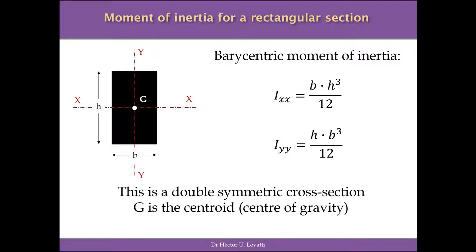We are going to define formulas for the barycentric moment of inertia of this rectangle, which has base B and height H. The moment of inertia about axis X is Ix = B × H³ / 12. For the moment of inertia about axis Y, the formula becomes Iy = H × B³ / 12. Basically it's the same formula, but depending on the reference axis, it works differently.